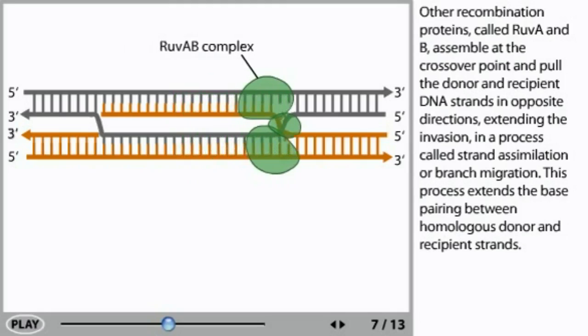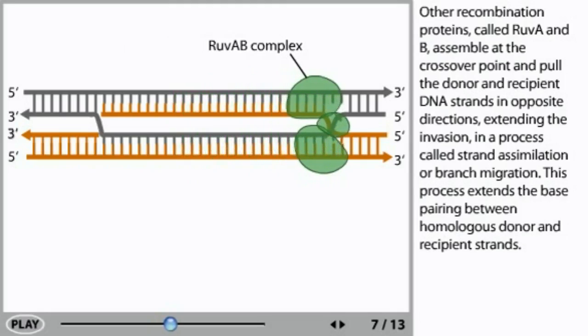This extends the invasion in a process called strand assimilation or branch migration. This process extends the base pairing between homologous donor and recipient strands.